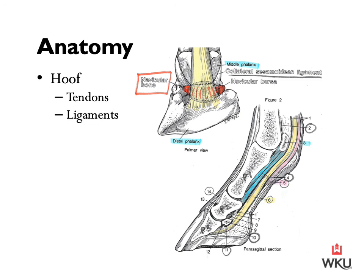The superficial digital flexor tendon runs along the back of the cannon bone and connects the superficial flexor muscle of the forearm to the bones of the pastern. Another tendon marked is number six — highlighted in yellow in the bottom right diagram — the deep digital flexor tendon.